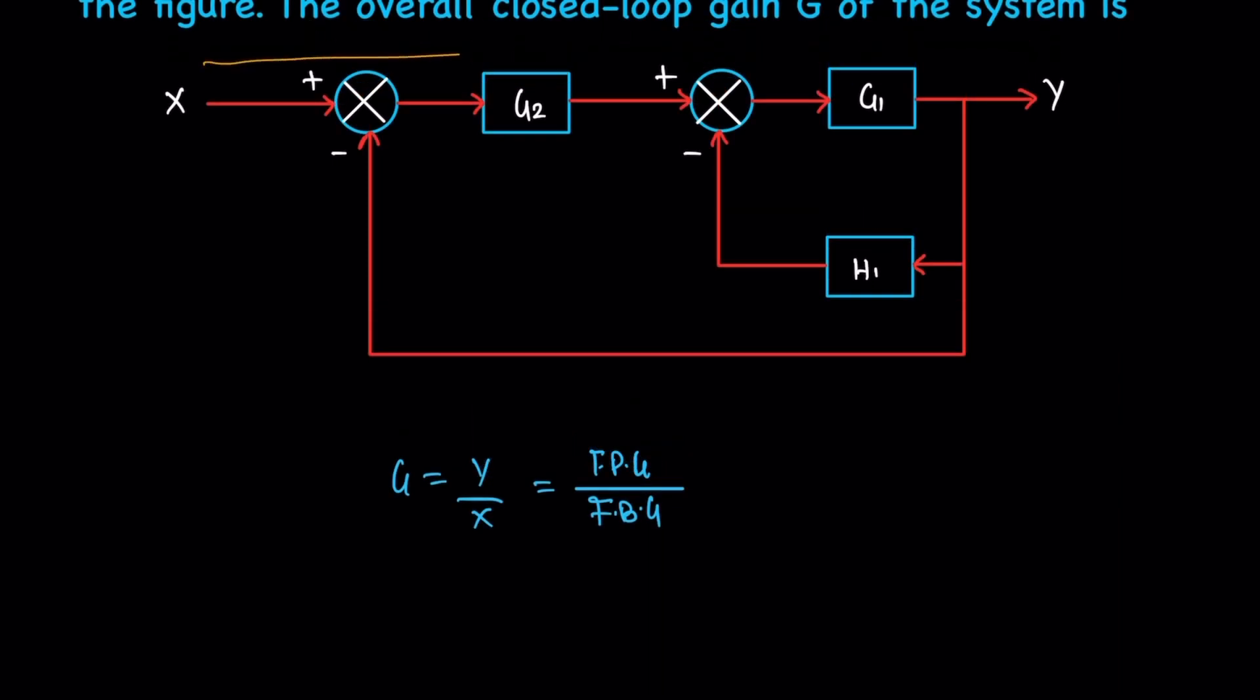This question has only one forward path, so the forward path gain is the product of G2 and G1. The numerator is G1 times G2, divided by the denominator which contains the feedback gains.